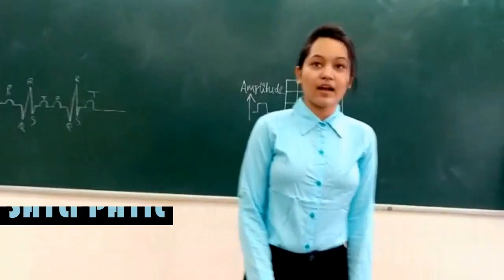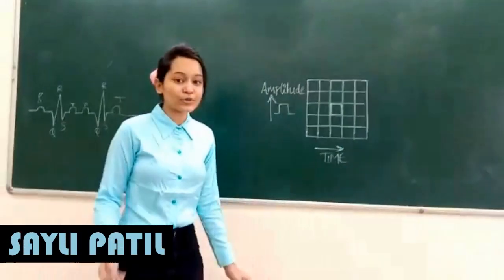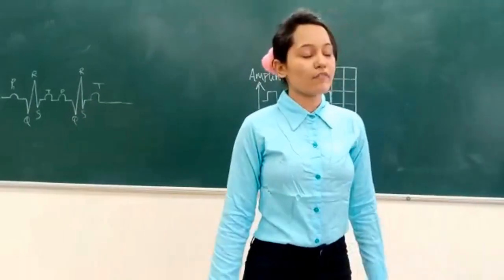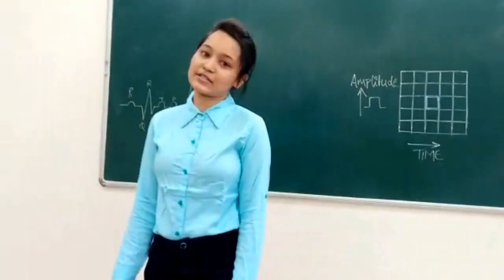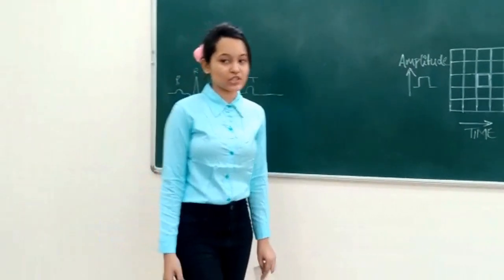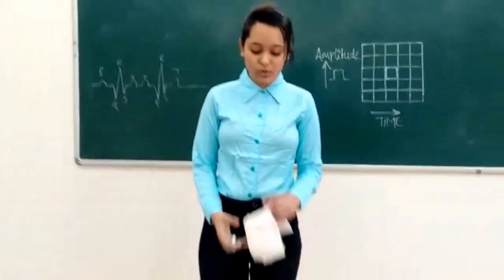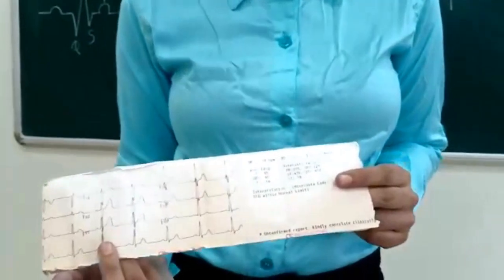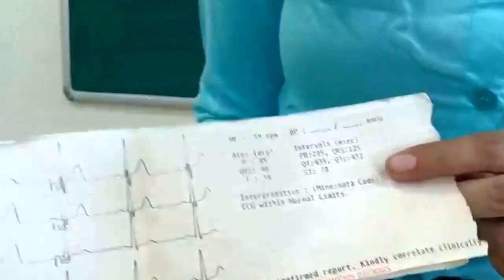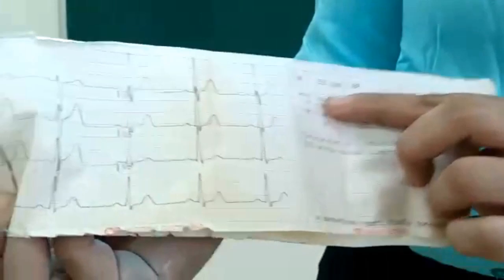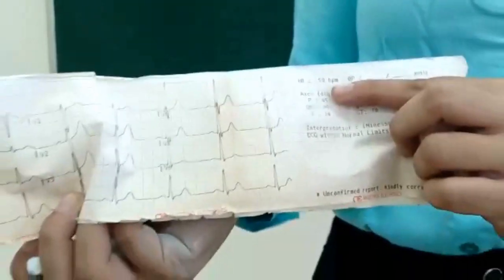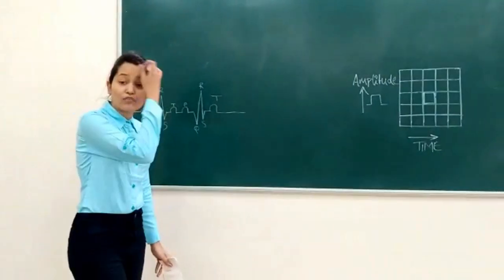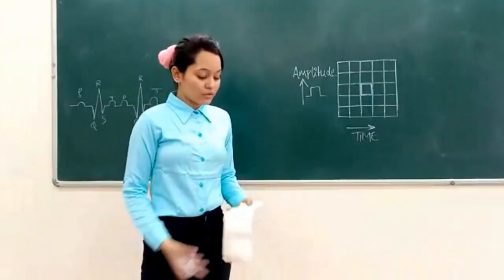I am Saili. I will explain how to calculate the ECG heart rate using the thermal paper manually. Sneha already explained the thermal paper and how to calculate ECG practically. Here, using a thermal paper reading, we have already calculated a result of 59 beats per minute. Now let me show how to calculate this manually.